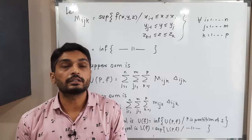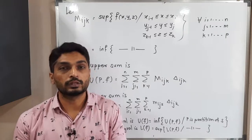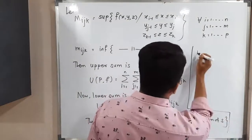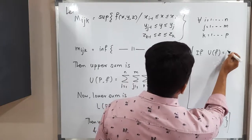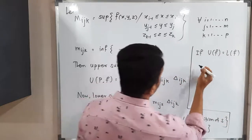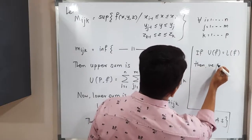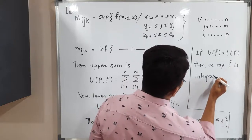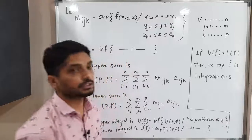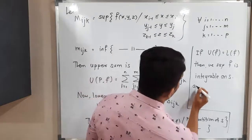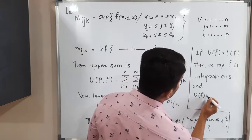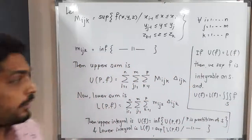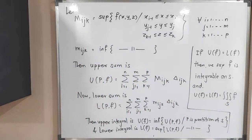If the upper integral UF equals the lower integral LF, then we say f is Riemann integrable on S. Furthermore, UF = LF equals the value of the triple integral of f over S. That concludes the theory of triple integration.